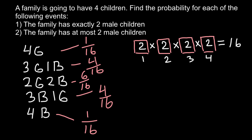Now we can answer the first question: the family has exactly two male children. Only one combination meets this requirement — the two boys and two girls case. The all-girls case has no boys, the three girls and one boy case has only one boy, the three boys and one girl case has three boys, and all four boys doesn't qualify either. So the probability of exactly two male children is 6 out of 16.